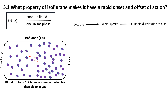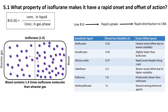Had it been more soluble in blood, the anesthetic would be bound to blood with less of it available to act on the brain. Similarly, when administration stops, it rapidly leaves the blood and is exhaled, leading to fast recovery. The table given here compares the induction speed of different agents based on their blood-gas partition coefficient.